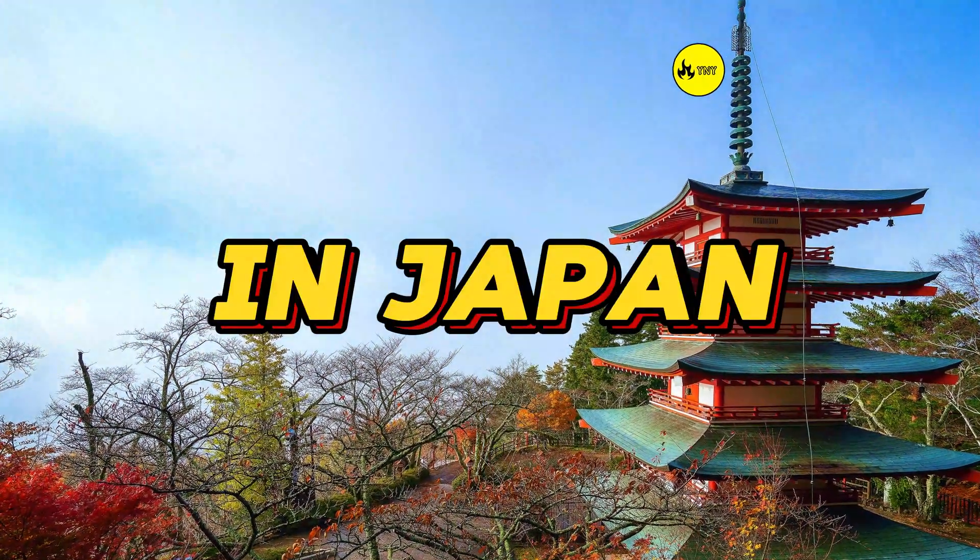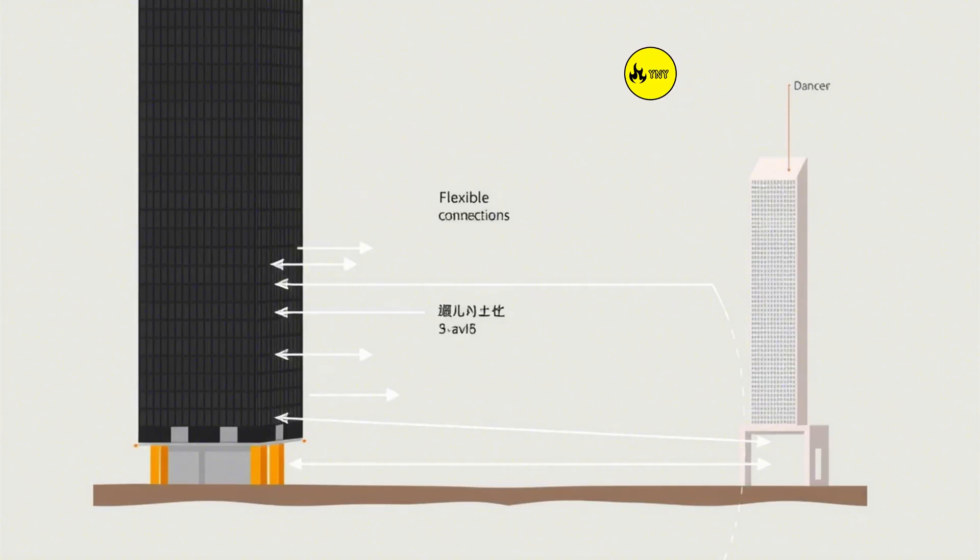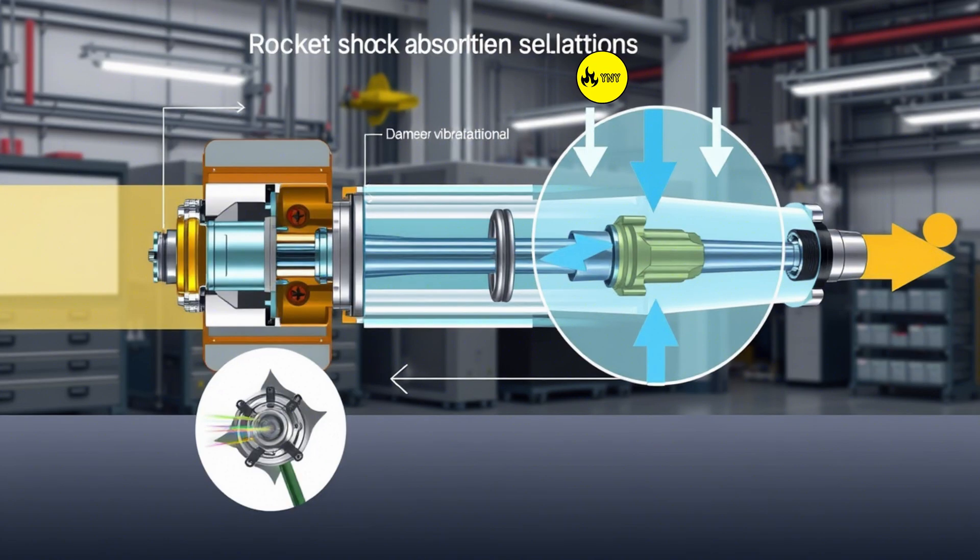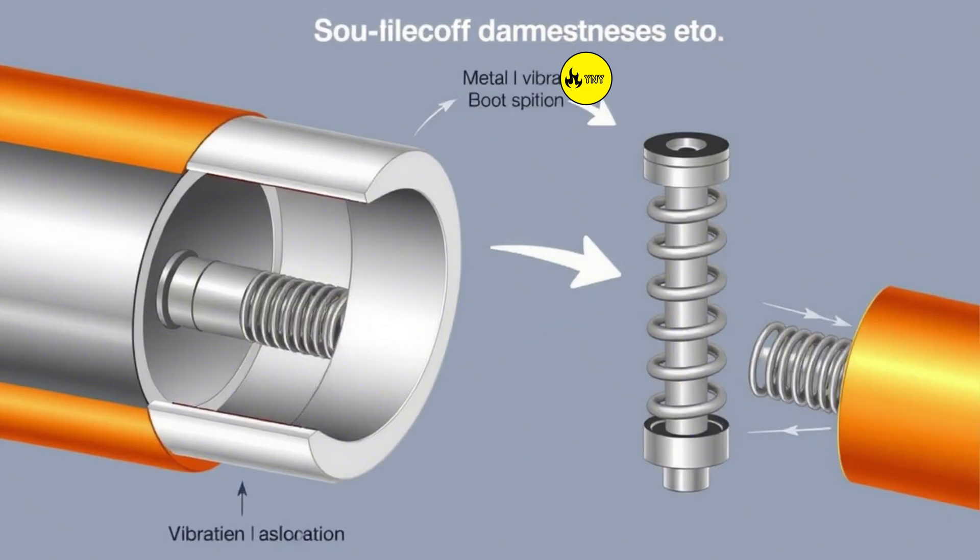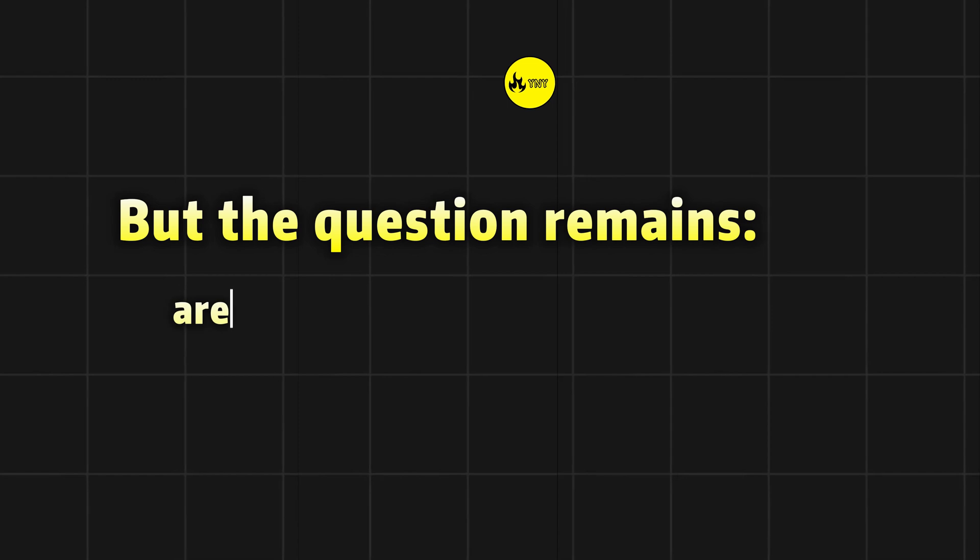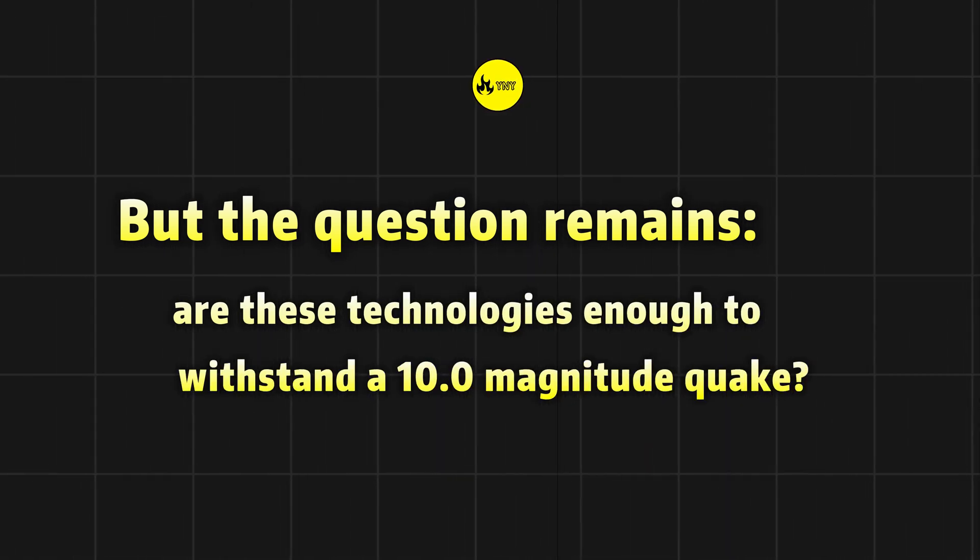In Japan, skyscrapers don't collapse. The secret? Base isolation technology that lets buildings dance above the quake. Science has also developed shock absorbers, like those used in rockets to dampen vibrations, and flexible concrete that bends but doesn't break. But the question remains, are these technologies enough to withstand a 10.0 magnitude quake?